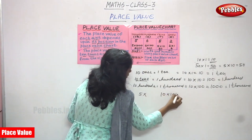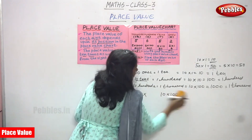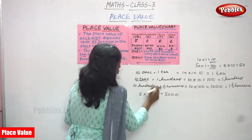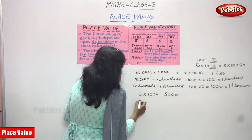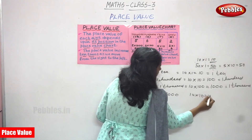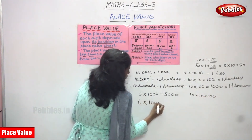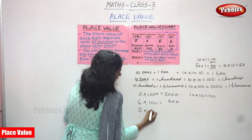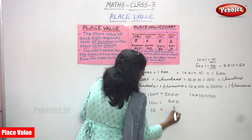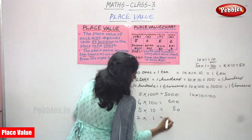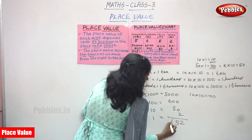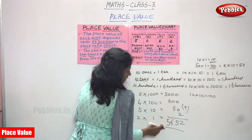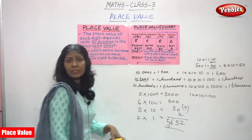So 5 into 1000 gives 5000. 6 into 100 gives 600. 5 into 10 gives 50. 2 into 1 gives 2. The total — add 2, 50, 600, and 5000 — equals 5652. That is the example number.